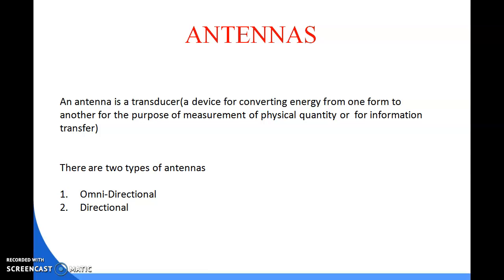Directional antennas are capable of propagating the signal further because they focus power in a single direction. Long-distance transmission requires high power and a directive radiation pattern. Wireless LAN uses omnidirectional antennas, while wireless MAN uses directional antennas. An omnidirectional antenna covers 360 degrees, while a directional antenna focuses in a particular direction.